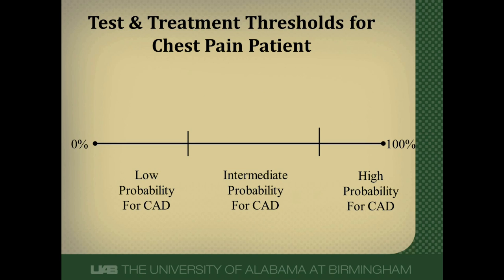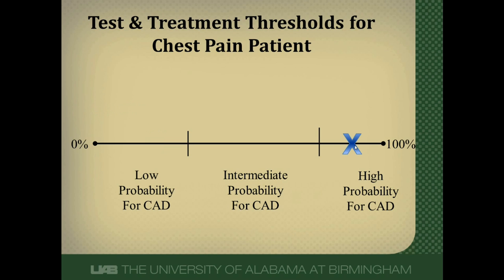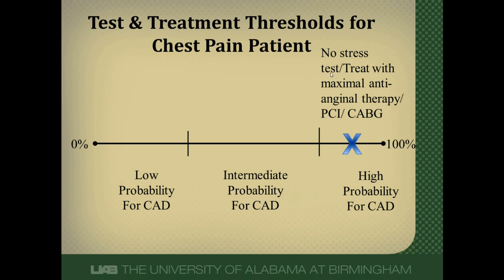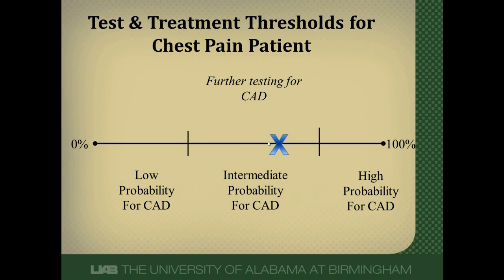The key point — and one doctors often forget — is that testing is really only indicated between these two thresholds, in the intermediate testing zone. Diagnostic tests are only useful in that intermediate range. Applying this to our patient: if his probability for coronary disease fell very low, I'd do nothing further. If his probability was very high, I might treat him directly — with medication, angioplasty, or bypass surgery — without further testing. But if his probability fell in this intermediate zone, I would test him for coronary artery disease because I'm not sure if he has it and haven't crossed my treatment threshold but am still above the testing threshold.